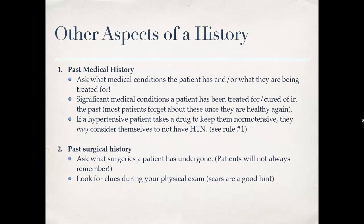Past medical history is exactly what it sounds like — what conditions do they have, or what have they had that's been treated and cured? Keep in mind that if a patient is being treated for a disease and feels asymptomatic, they might not tell you. So it's important to look through their drugs and ask why they're on a certain medication, as that's really the best way to determine past medical history. Past surgical history — ask what surgeries they've had; sometimes patients forget, so look for clues like scars during the physical exam.